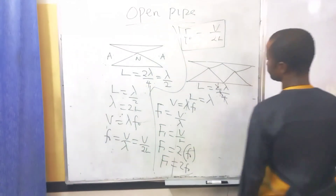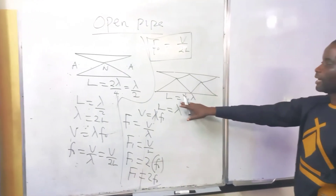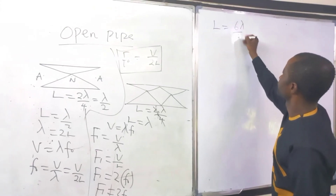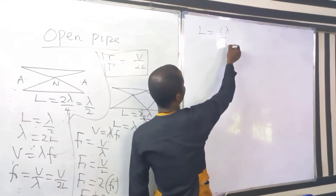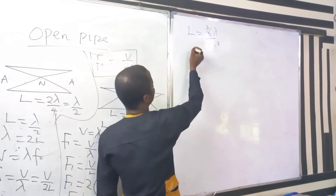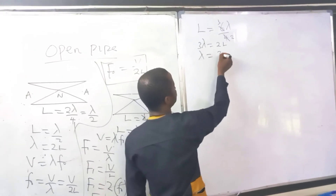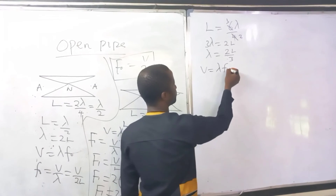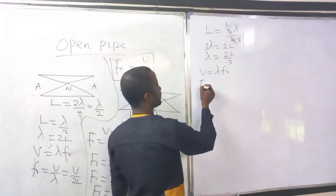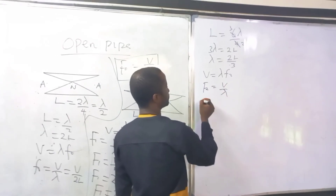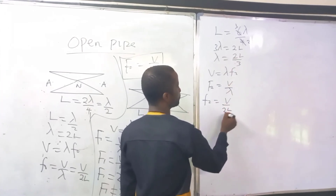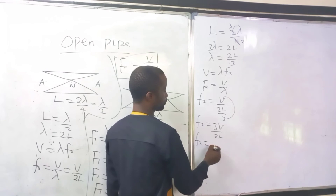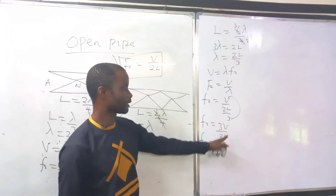For the second overtone of the open pipe, L equals 6 lambda over 4, which gives 3 lambda equals 2L, so lambda equals 2L over 3. Using V equals lambda times F2, F2 equals V over lambda. Substituting lambda equals 2L over 3: F2 equals 3V over 2L. Since V over 2L equals f-naught, F2 equals 3 f-naught.